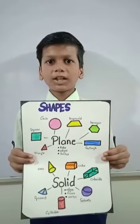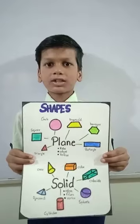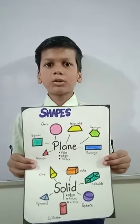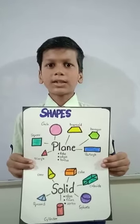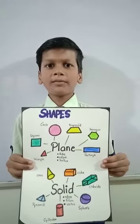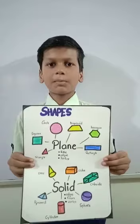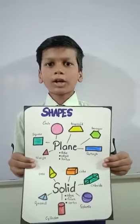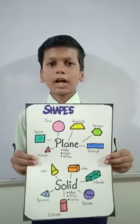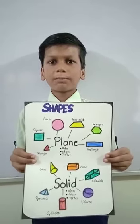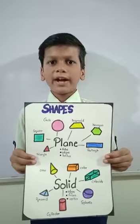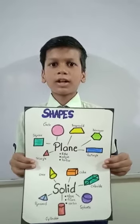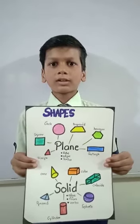Plane shapes are two-dimensional shapes as they have length and breadth but no thickness. The straight lines which make the plane shape are called sides, and the points where two sides meet are called corners. For example: square, triangle, circle, ovals, and pentagon.